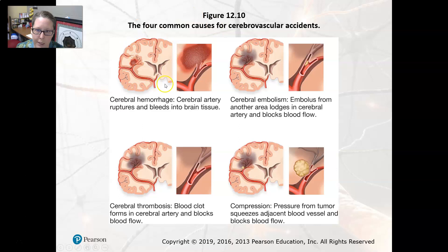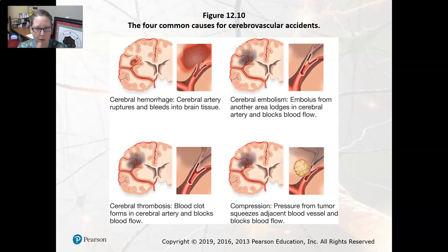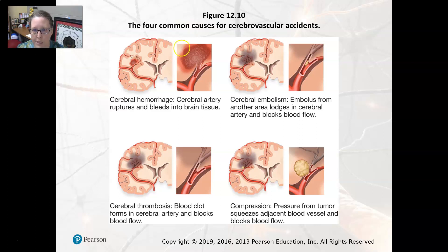Cerebral hemorrhage occurs where an artery ruptures and bleeds into the brain tissue. The problem is that the brain is contained in the skull, and the skull does not have the capacity to expand. So if blood accumulates, it's going to press down on the brain tissue, whereas in other parts of the body the blood would push soft tissue out and present as a bruise.